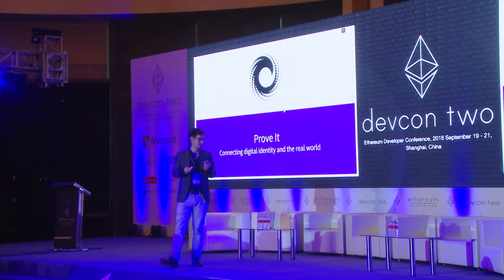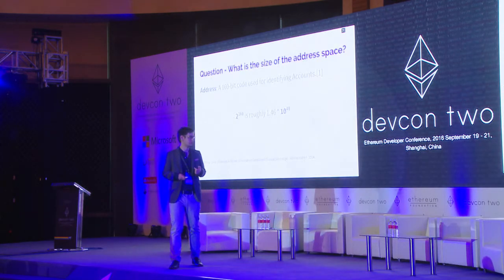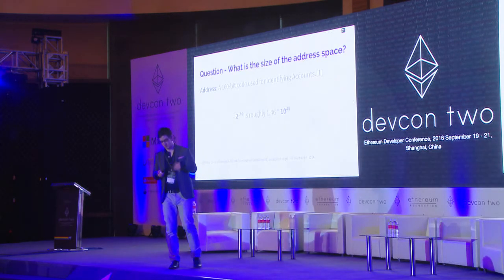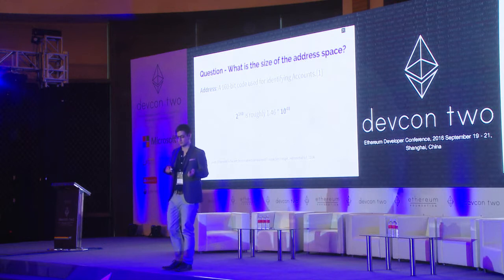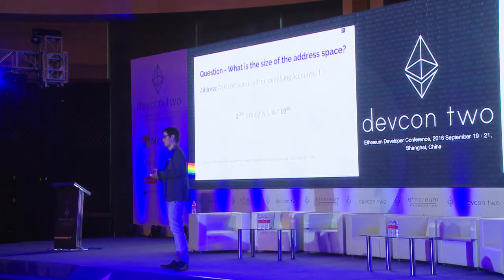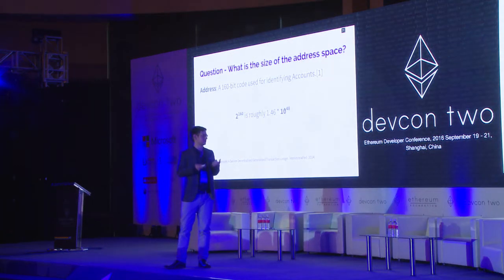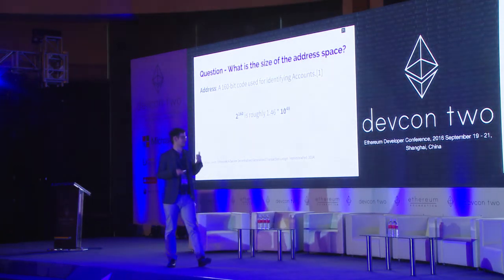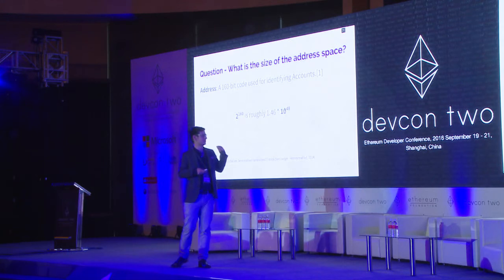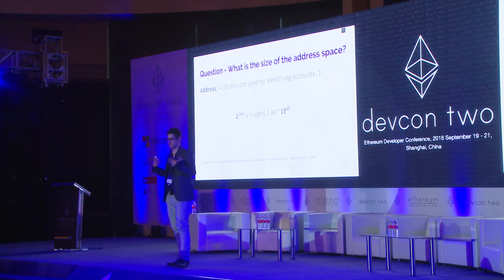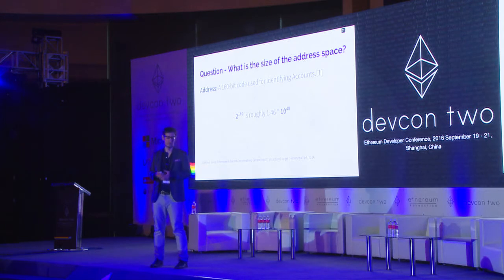When I'm not doing the enterprise stuff, I like to spend my time thinking about identity, KYC, and what these things can look like on the blockchain. I like to frame the discussion by this question: what is the size of the address space that we're dealing with when we use Ethereum?